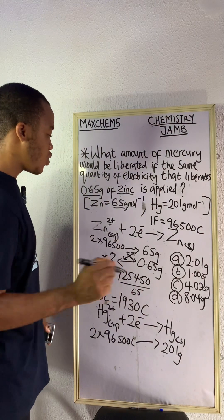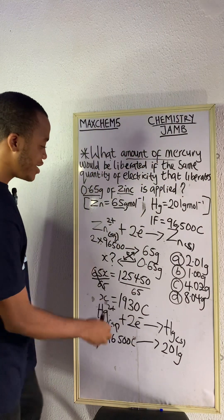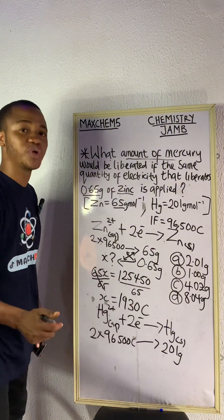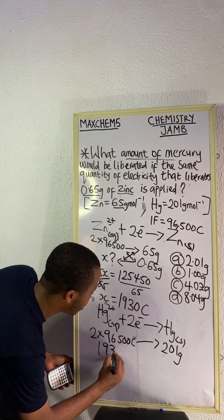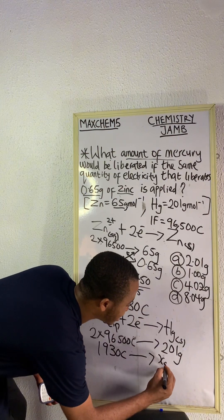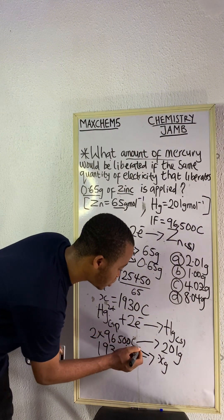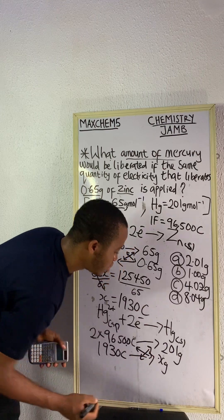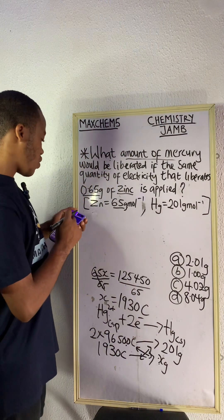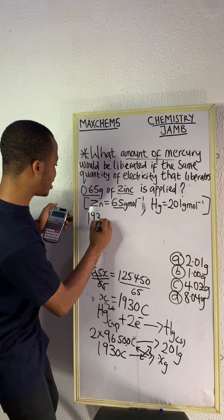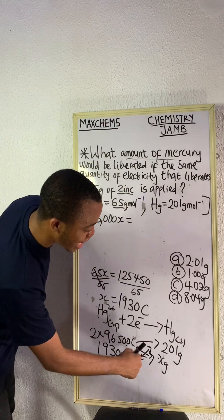Remember that we already know the amount of electricity. Our aim now is to calculate the amount of mercury. Two Farads — that is 2 × 96,500 coulombs — liberates 201 grams of mercury, because the molar mass of mercury is 201 grams. Now we will say that 1,930 coulombs will produce what amount of mercury — let's call it x grams. We cross-multiply: x × 193,000 equals 1,930 × 201.